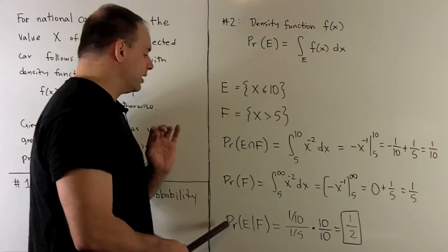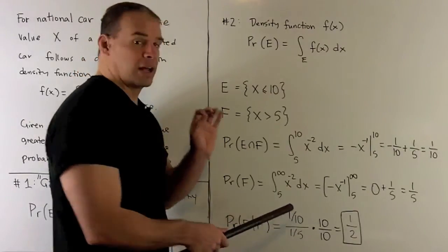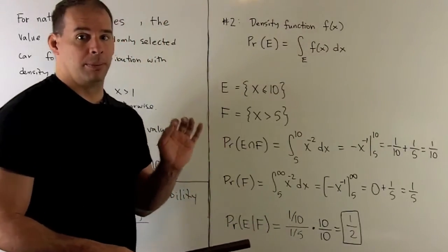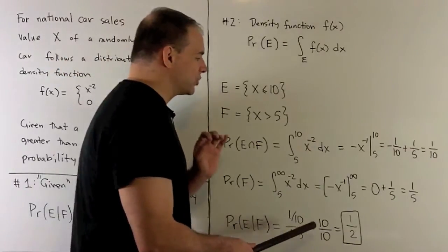Now, for the conditional probability, we're gonna take the intersection, find this probability, divide by the probability of F, and then that's gonna give us 1 half.